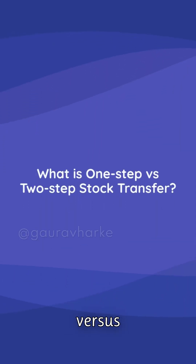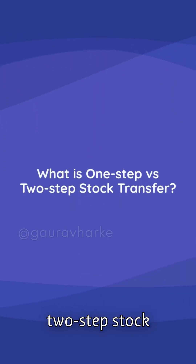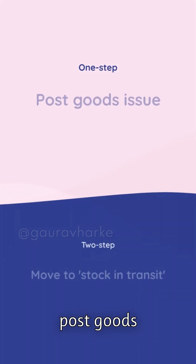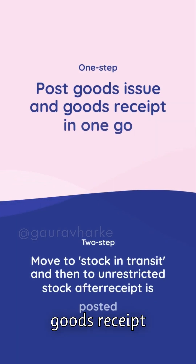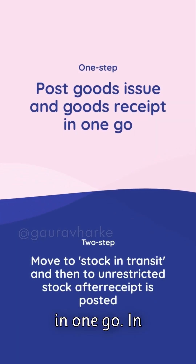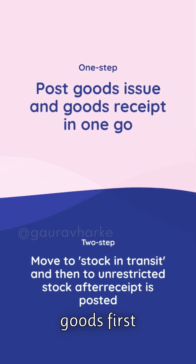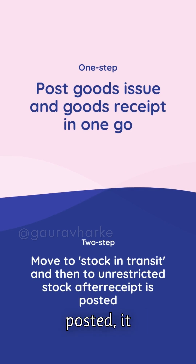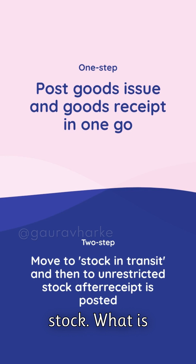What are one-step versus two-step stock transfers? In one-step, you post goods issue and goods receipt in one go. In two-step, goods first move to stock in transit, and only after receipt is posted, it hits unrestricted stock.